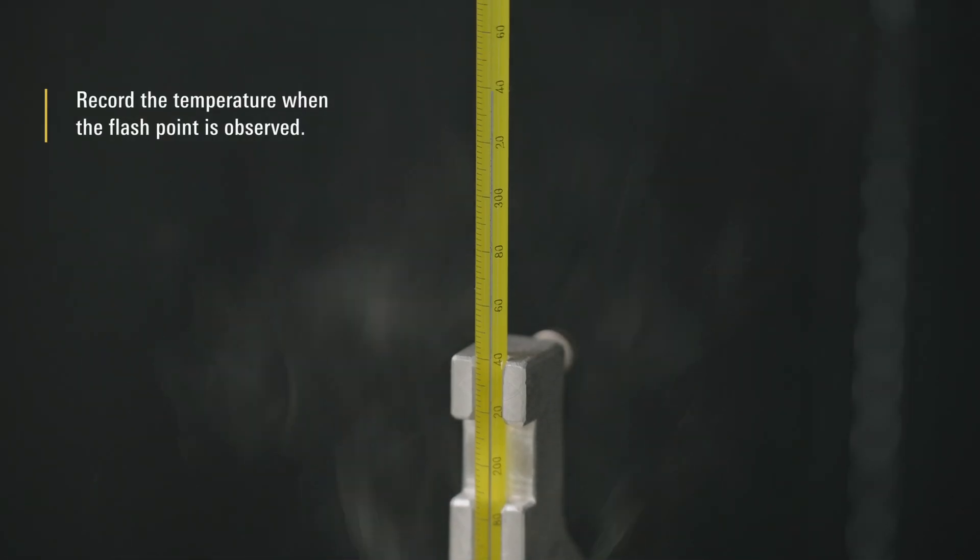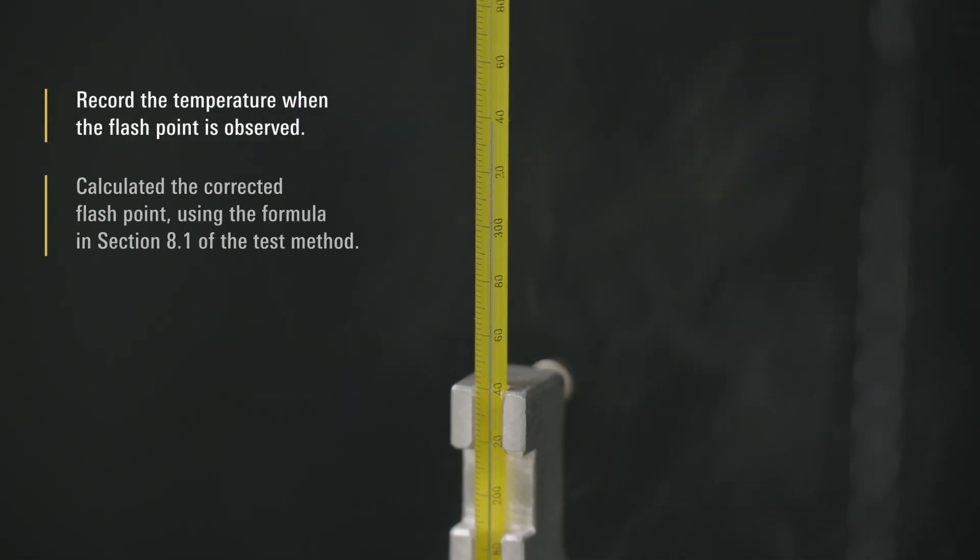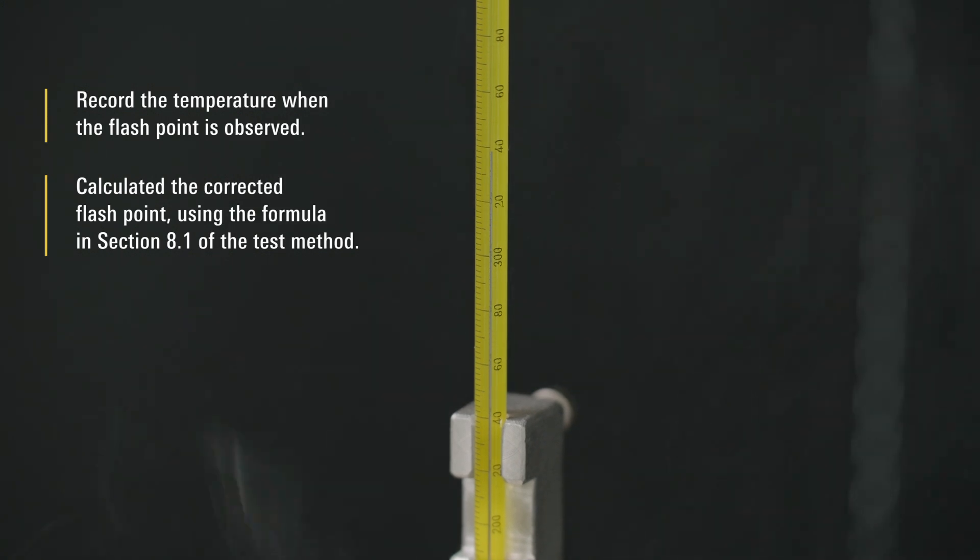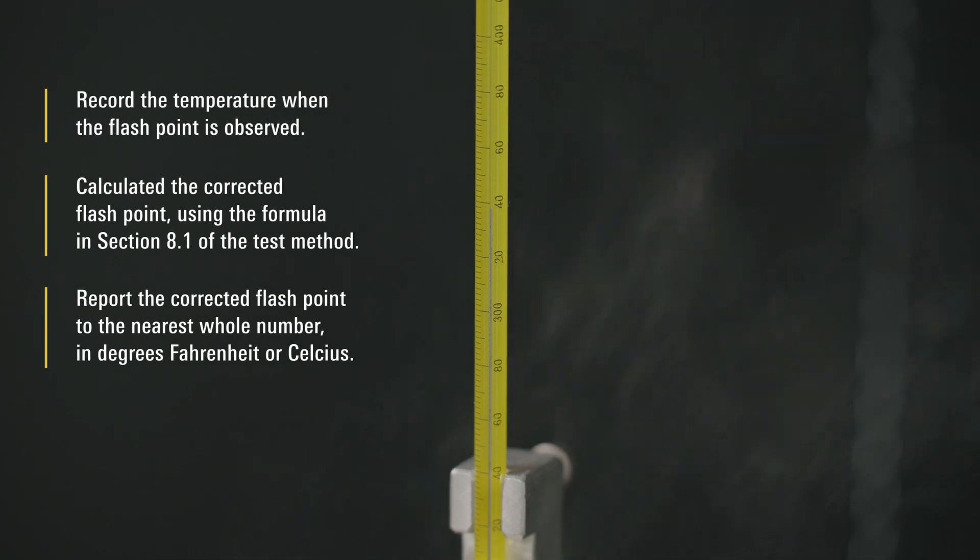Record the temperature when the flash point is observed. Calculate the corrected flash point using the formula in Section 8.1 of the test method. Report the corrected flash point to the nearest whole number in degrees Fahrenheit or Celsius.